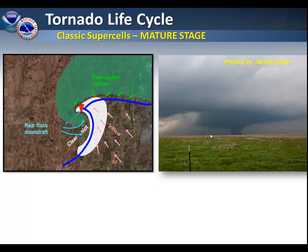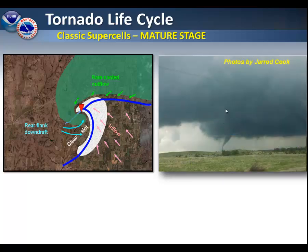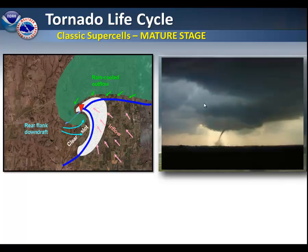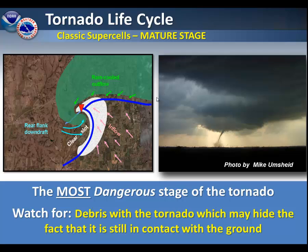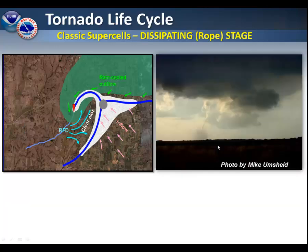Here is an example of a tornado at its mature stage. This is the most dangerous stage of the tornado. You should watch for debris with the tornado, which may hide the fact that it is still in contact with the ground. In this particular example, you cannot really see whether the point of the tornado is touching the ground, but you can still see all the debris being kicked up with it.